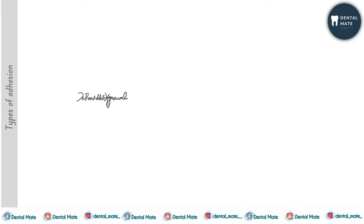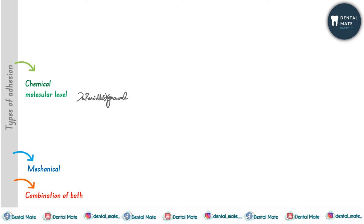What are the different types of adhesion? Adhesion could be classified into chemical, mechanical, or a combination of both types. The chemical type of adhesion occurs at the molecular level when there is a transfer of electrons or there is attraction between the molecules.